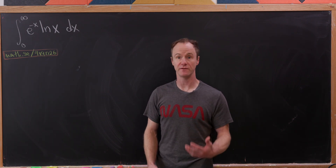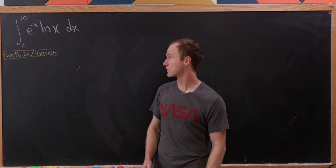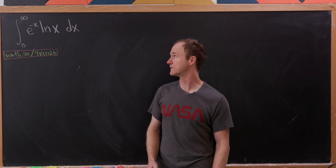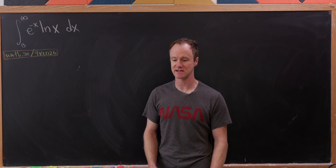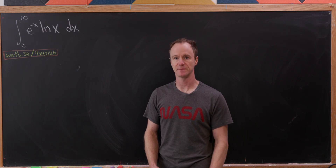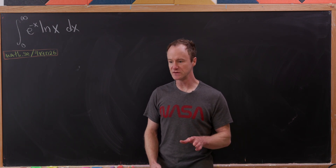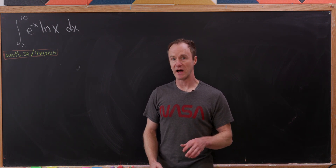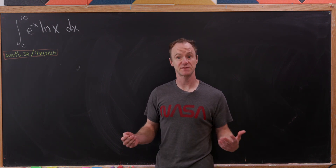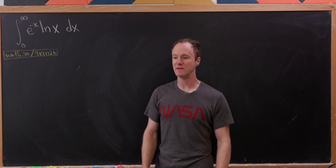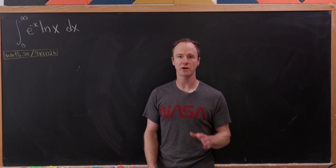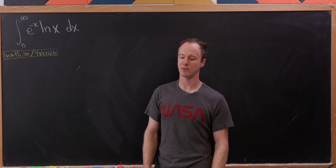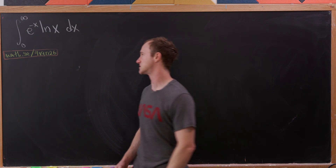We're going to evaluate the integral from zero to infinity of e to the minus x times the natural log of x. And we're going to do this by first splitting it up and then using a nice trick with integration by parts. So let's get started.